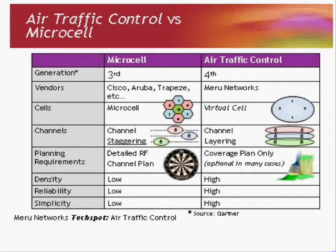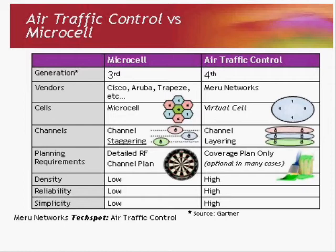To summarize: what makes air traffic control so useful compared to Microcell? Microcell is third generation, while Gartner describes fourth generation as coordinated AP — and that's what we're doing. Essentially every other vendor falls under the Microcell category. In terms of cells, Microcell requires hexagonal deployments where you must keep each AP on different channels — either you do it yourself or the system solves it for you. With VirtualCell, you put them all on the same channel and it works perfectly. With channel layering, Microcell has a channel staggering problem where neighboring APs are on different channels, wasting capacity, whereas with air traffic control you don't worry about that.